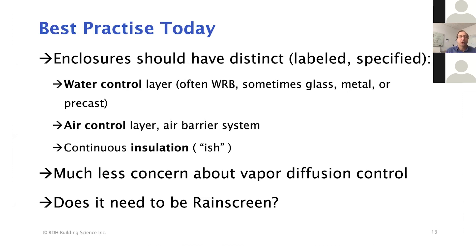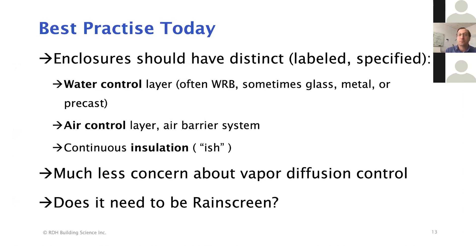The reason I put 'ish' behind continuous insulation is that it's not always really continuous. In fact, there's a lot of debate about how continuous it has to be. When we attach cladding to the support structure and the enclosure, we actually penetrate the insulation layer. And there are many jurisdictions in Canada and the United States where they will ignore things like balconies penetrating through, or floor slabs — both massive penetrations of the thermal control layer.